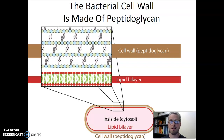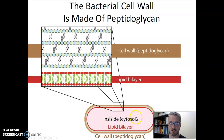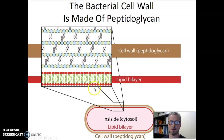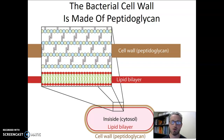The bacterial cell wall is made out of a chemical structure called peptidoglycan. I have a diagram here demonstrating a simple bacterial cell. The inside of the cell contains the cytosol or cytoplasm. As you move out of the cell you cross the lipid bilayer or cell membrane, and then immediately outside the cell membrane is the cell wall, which is made out of peptidoglycan.